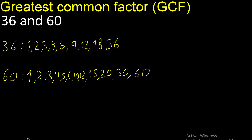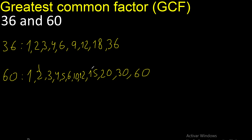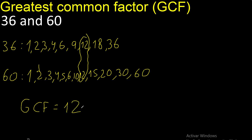Now compare the factors. Equal... equal... equal. 12 is the largest common factor. Therefore, the greatest common factor is 12.